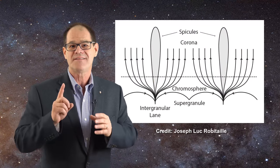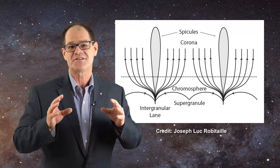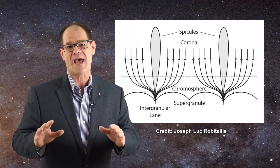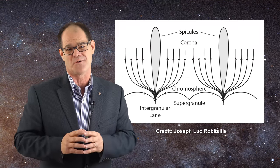Spicules tend to lie above intergranular lanes, as can be seen in this figure, and it is easy to envision that they are channeling condensed hydrogen back towards the interior of the Sun, not acting to push matter into the corona.